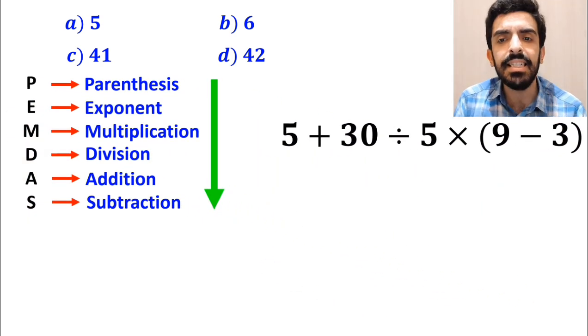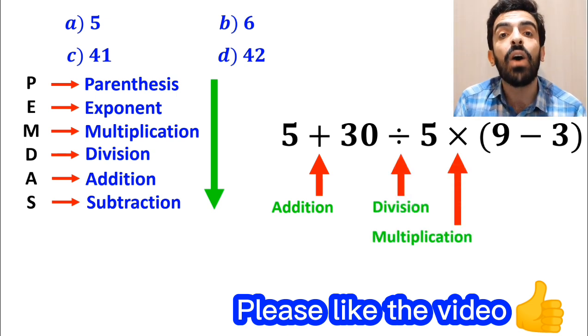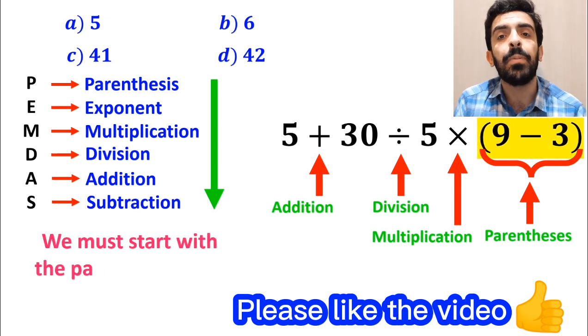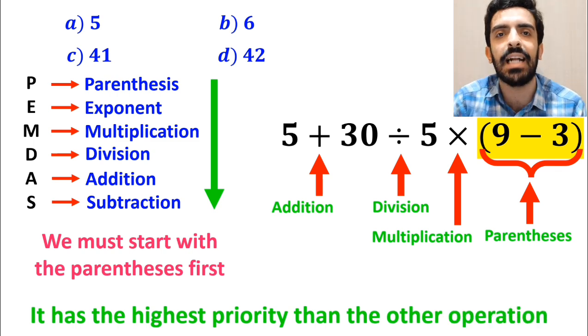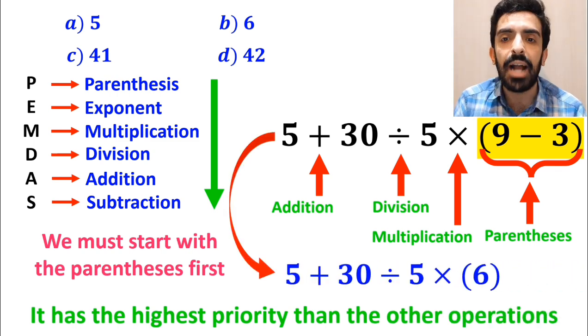Alright, as you can see in the image and this expression, first we have an addition sign, then a division sign, followed by a multiplication, and finally parenthesis. We must start with the parenthesis first because it has the highest priority than the other operations. So instead of this expression, we can write 5 plus 30 divided by 5 times 6.